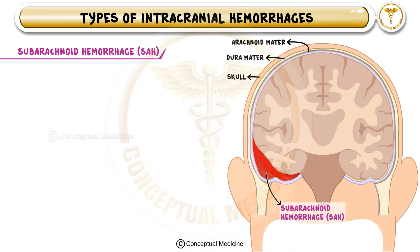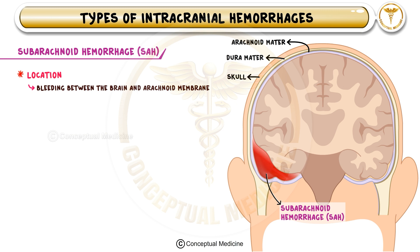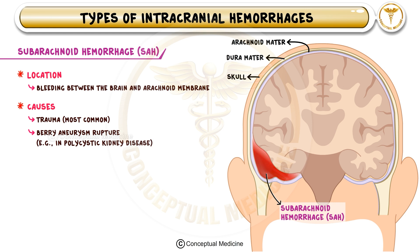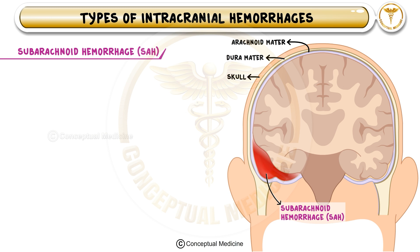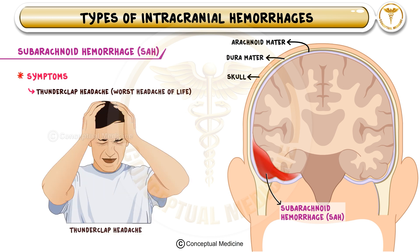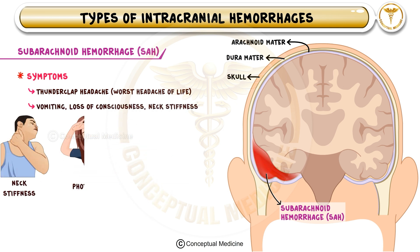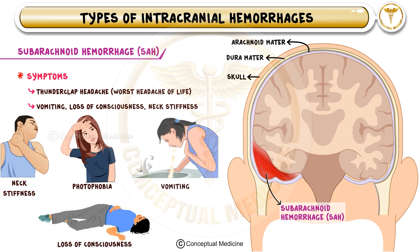Subarachnoid hemorrhage (SAH) refers to bleeding in the subarachnoid space, where cerebrospinal fluid (CSF) circulates. There are two major causes of SAH: trauma, which is the most common, and rupture of a berry aneurysm, which is the classic non-traumatic cause. Aneurysmal SAH is often seen in conditions like polycystic kidney disease and Ehlers-Danlos syndrome. The hallmark symptom of SAH is a sudden, severe thunderclap headache, often described as the worst headache of life. Patients may also present with neck stiffness, photophobia, vomiting, and loss of consciousness.